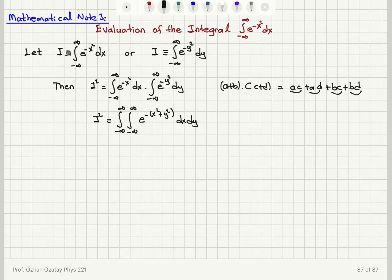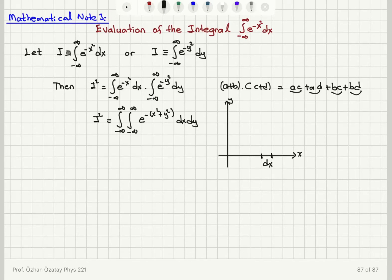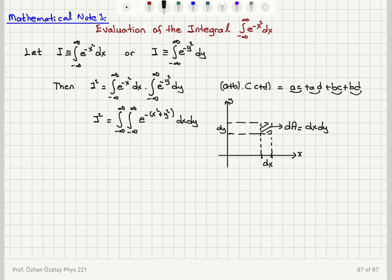Now I want to interpret this double integral of e to the minus (x squared plus y squared) dx dy geometrically. Looking at the Cartesian coordinate system with the x-axis and y-axis, if I pick a small range of x values dx and a small range of y values dy, multiplying dx and dy gives the incremental area element dA. So dA equals dx times dy in the Cartesian coordinate system.